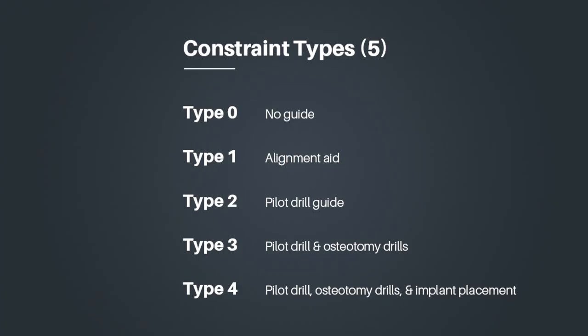Let's start at the low end of the constraint systems. A type 0 guide is no guide at all. If you're using a type 0 guide, you're doing surgery freehand. If you're currently freehanding your implant placements, don't worry — almost everyone starts off this way. But there's a learning path to fully guided surgery.